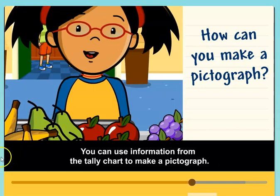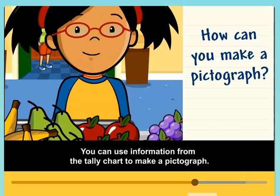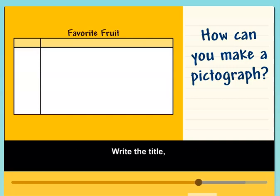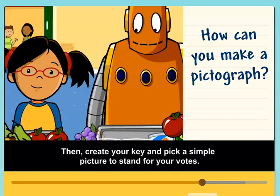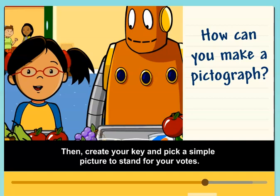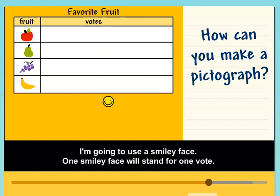You can use information from the tally chart to make a pictograph. First, draw a chart with two columns. Write the title and write the choices on the left. Then create your key and pick a simple picture to stand for your votes. I'm going to use a smiley face — one smiley face will stand for one vote.